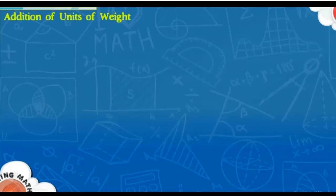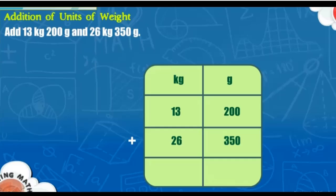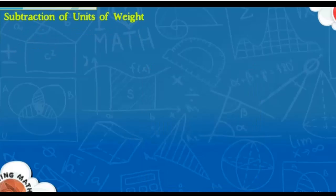Addition of units of weight: Add 13 kilograms 200 grams and 26 kilograms 350 grams. Arrange the numbers in proper columns, one below the other. First add the grams, then add the kilograms. The answer is 39 kilograms and 550 grams.